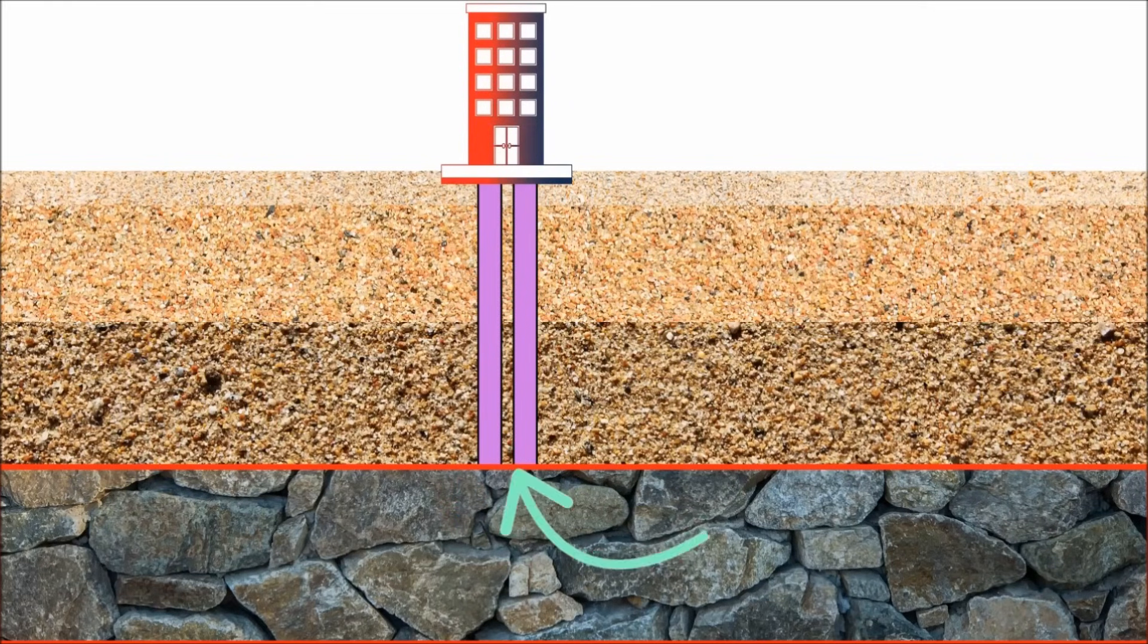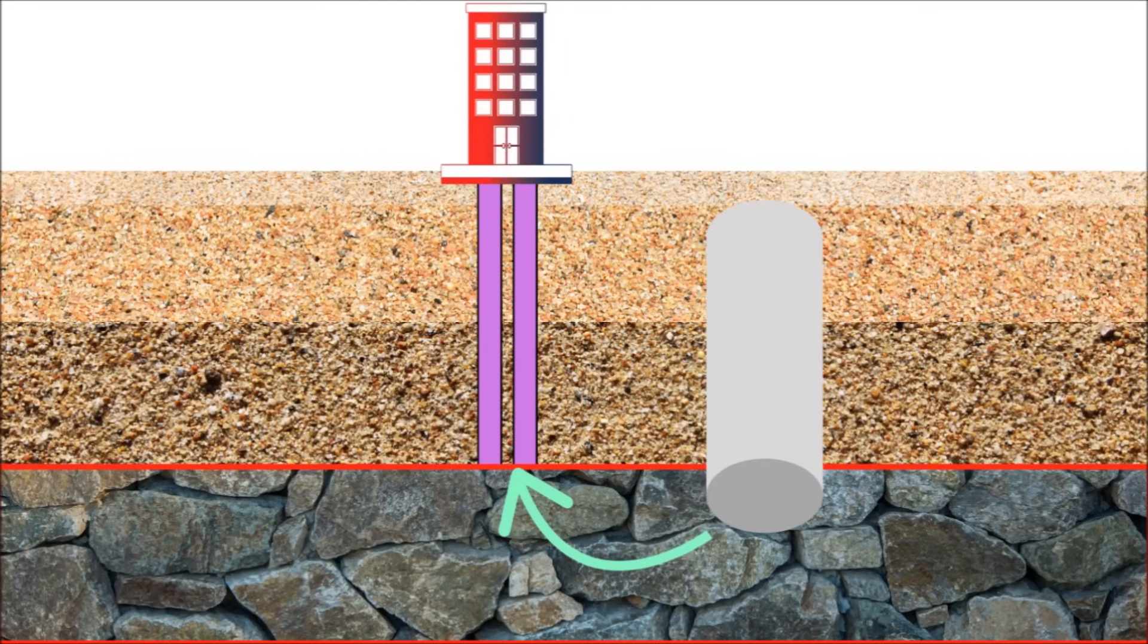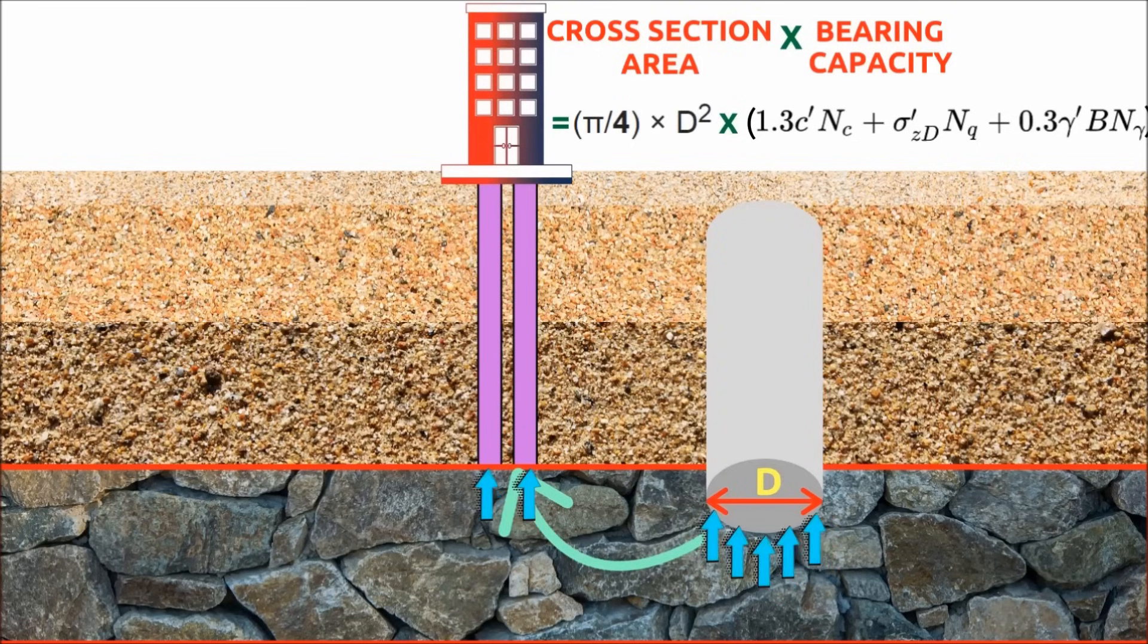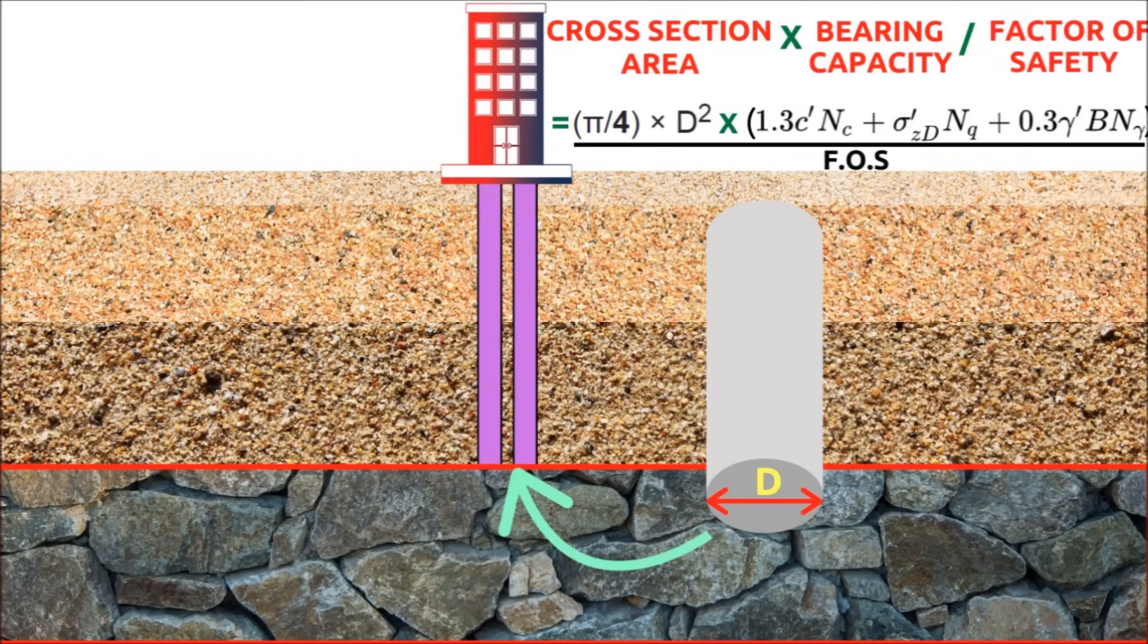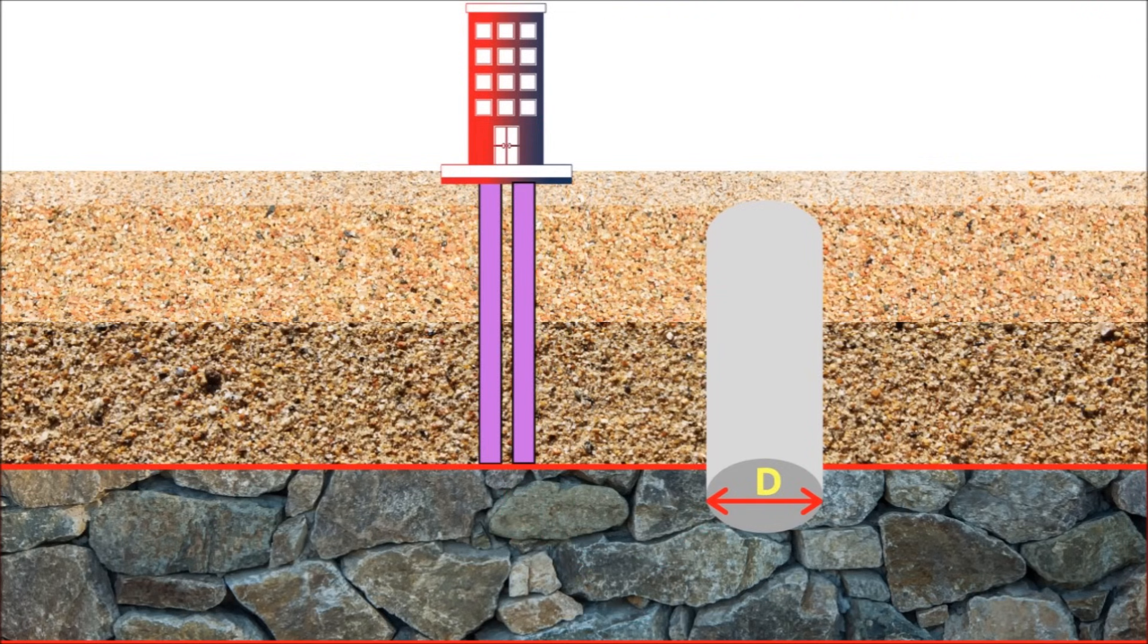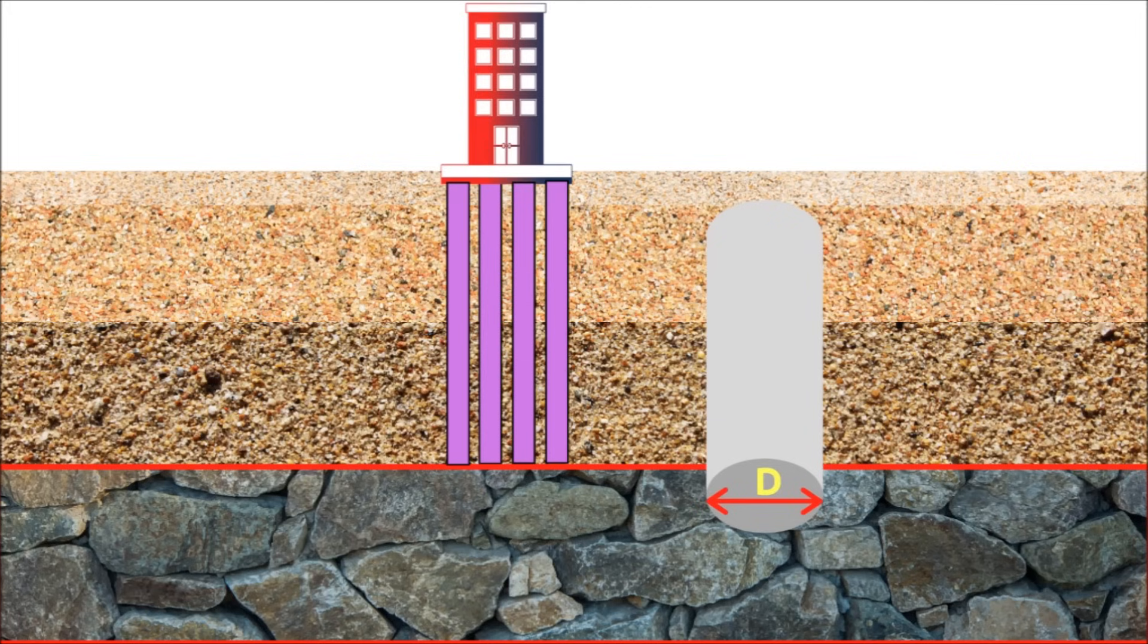The capacity of end bearing pile can be calculated by multiplying the cross-sectional area of the end of the pile and the bearing capacity of the hard soil in which the pile is resting, with considering a reasonable factor of safety. The total capacity of end bearing piles can increase by increasing the number of piles and pile diameter.